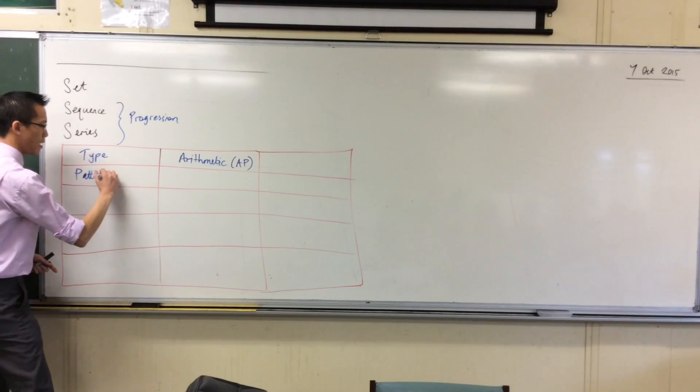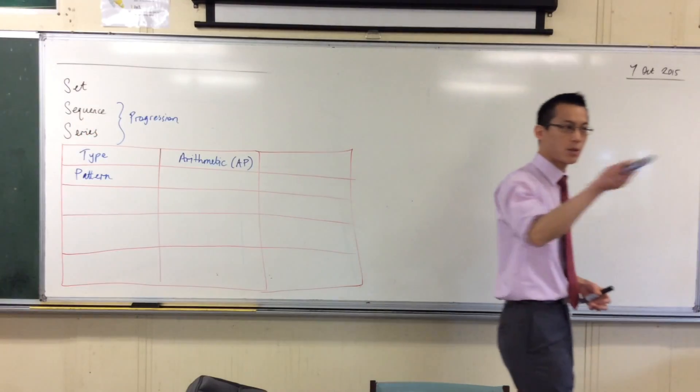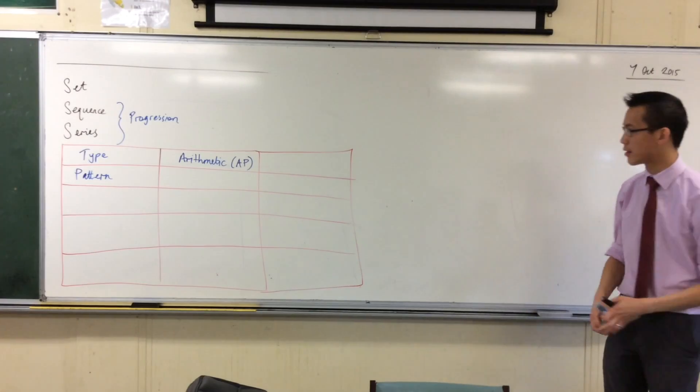So in other words, if you give me a set of values, I can tell you how that sequence will keep going, how it will progress. Now, what makes an arithmetic progression an arithmetic progression is that between each of the terms in the sequence, you have a common difference.